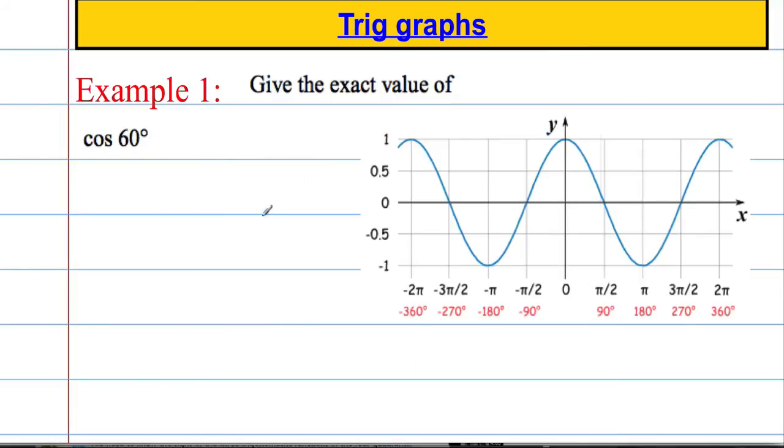So I'm asked to give the exact value of cosine of 60. Cosine of 60. Well we've already derived that earlier on. And when we derive that it's going to be 1 over 2. So a nice easy one to do. You can check it with your calculator if you wish.